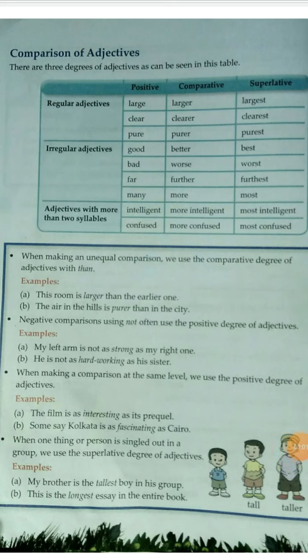In this video we are going to study about comparison of adjectives. Adjectives have three different forms: positive form, comparative form, and superlative form. We use the positive form when we tell about the quality of one person, comparative when we compare between two people, and superlative when we are comparing a person or a thing within a group.